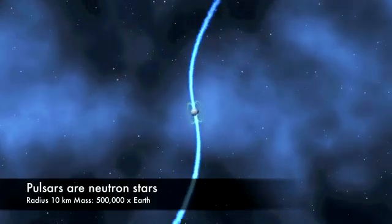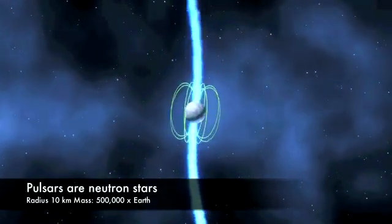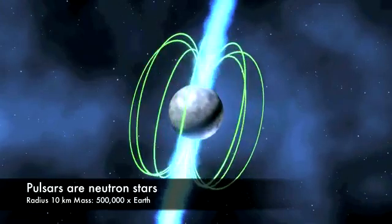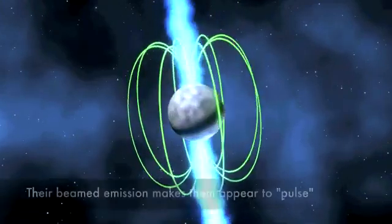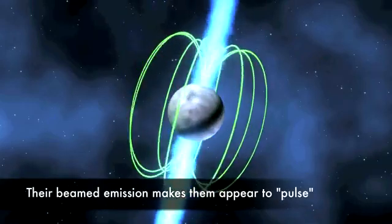Pulsars are neutron stars. They weigh about a half million times as much as the Earth, but are only 20 kilometres across. Their rotation makes them appear to pulse once per rotation period and they spin up to an amazing 700 times per second.